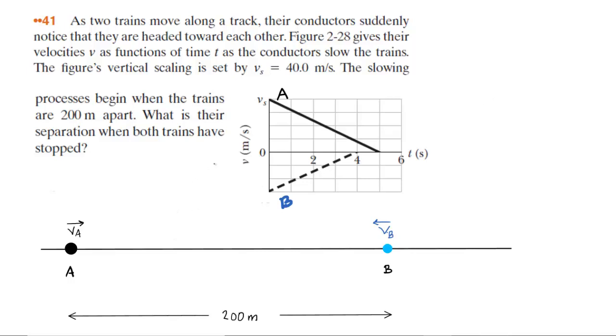The first step in analyzing this question is to take the given information and try to translate it into a picture. For example, we know that these two trains are moving along a track, so they are moving in a one-dimensional direction. What we've done is we've drawn a line down here and indicated the two trains that are traveling along that line. We've called the first train Train A and the second train Train B.